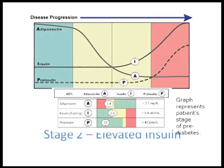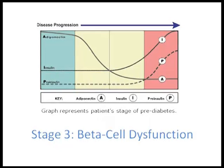In stage 2, shown in yellow, adiponectin dips down even further. There is no dysglycemia at this point. Insulin levels could be normal or increased, and same is the case with pro-insulin. And ultimately, in the final stage just preceding diabetes, adiponectin falls further, beta cell function starts declining, and then you have full-blown insulin resistance and the type 2 diabetes diagnosis.